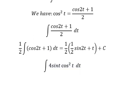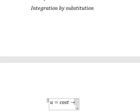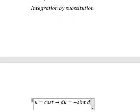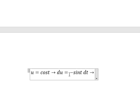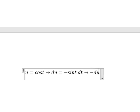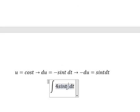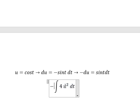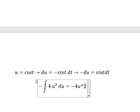We need to use integration by substitution. I will let u equal cos(T). Differentiating both sides gives negative sin(T) dt. Since we don't have a negative sign here, I will move it to the left. So sin(T) dt is replaced by negative du.